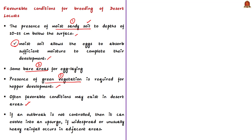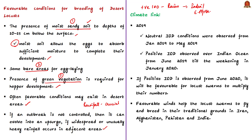For soil to have moisture, rainfall plays a crucial role. Also, if an outbreak is not controlled, it can evolve into an upsurge if widespread or unusually heavy rainfall occurs in adjacent areas, creating favorable breeding conditions. This is where the author's points are relevant, since the positive Indian Ocean Dipole is associated with bringing heavy rains to India and East Africa. As per the IOD bulletin issued by IMD for May 2020, a positive IOD is not observed over the Indian Ocean. However, last year, positive IOD conditions existed over the Indian Ocean from June 2019 till weakening in January 2020. If such a thing happens this year from June onwards, it will be favorable for locust swarms to multiply.